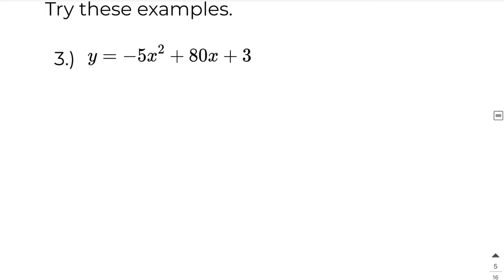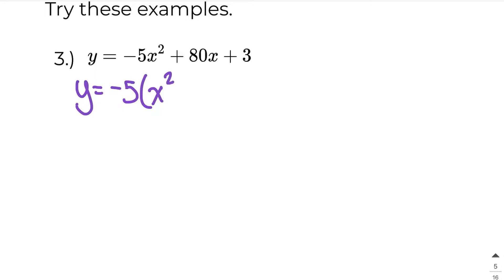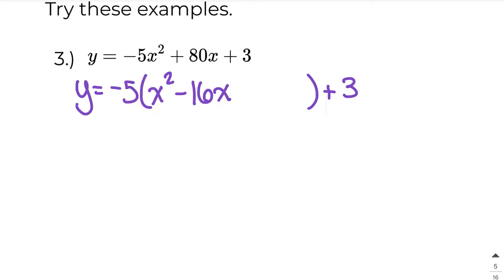Let's take a look at another example. Here we've got y equals negative 5x squared plus 80x plus 3. The a value is negative 5. Inside my brackets I have to have just an x squared, so I'm going to factor out a negative 5. Negative 5x squared divided by negative 5 gives x squared, which is exactly what I want. Then 80x divided by negative 5 gives negative 16x. I'll leave some space, then write plus 3 — leaving the constant out of the bracket.